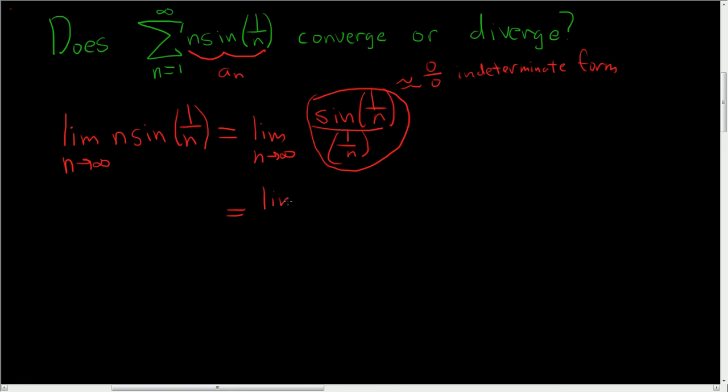So this is the limit as n approaches infinity. To use L'Hopital's, you just take the derivative. So the derivative of sine is cosine. So cosine 1 over n. And then we have to use the chain rule. Now the derivative of 1 over n is negative 1 over n squared.